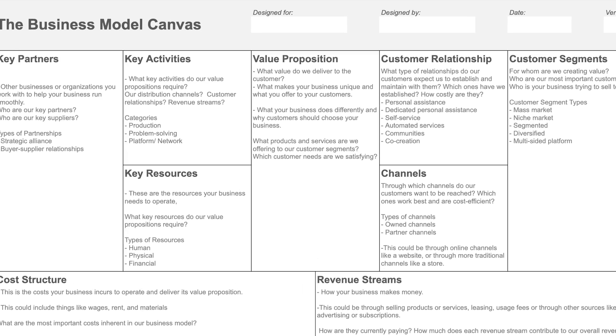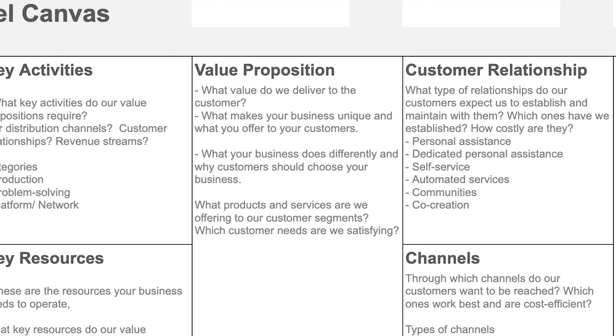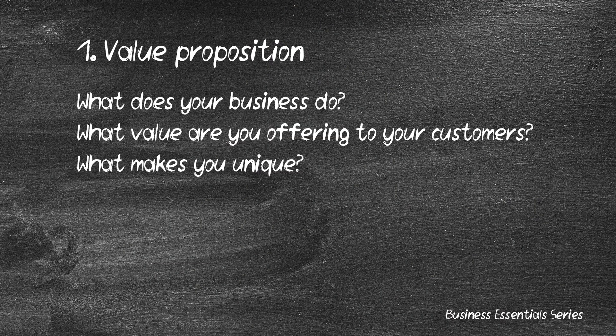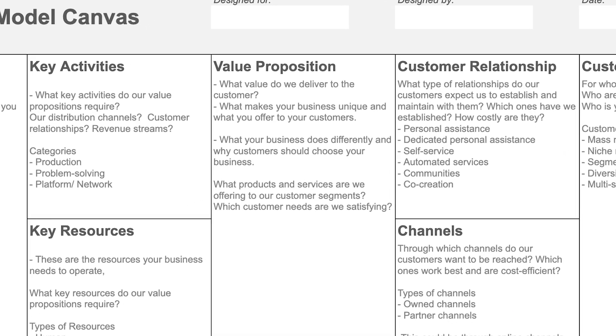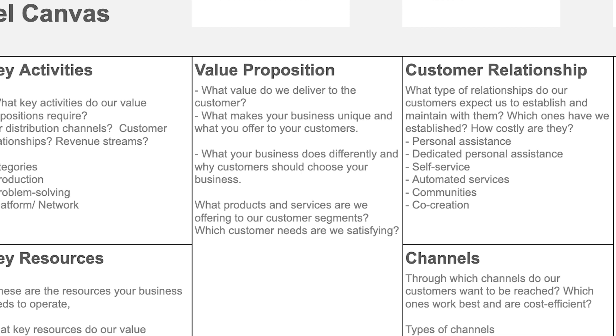Let's look at each of the nine key elements of the business model canvas in detail, starting with the value proposition. Your value proposition simply means what value you're offering to the customer or what value you are delivering. Every business exists to create value or to solve a certain problem. What you put in this space is the value your business is creating for customers — how your business is different from others and why people should choose you.